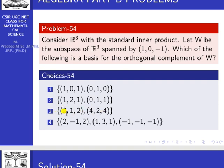For option 3, check linear independence: a(2,1,2) + b(4,2,4) = 0 gives 2a + 4b = 0, i.e., a + 2b = 0, so a = −2b. This set is not linearly independent — it is linearly dependent.